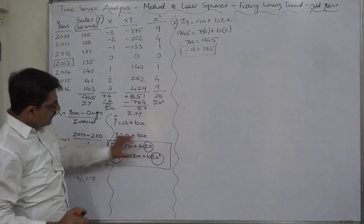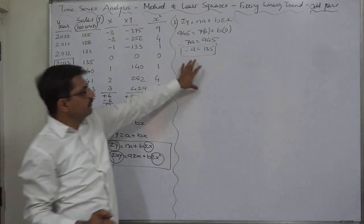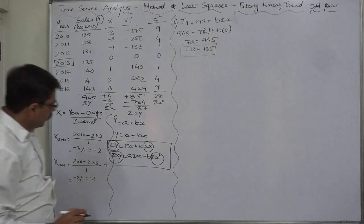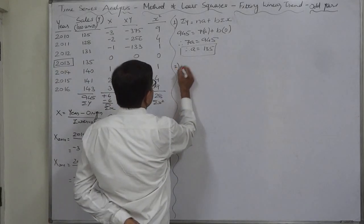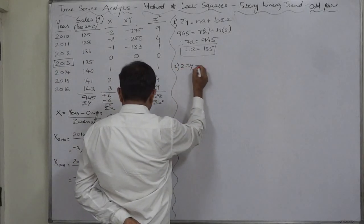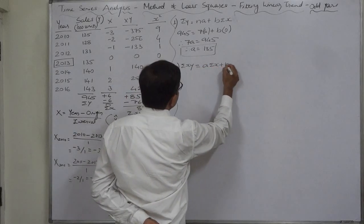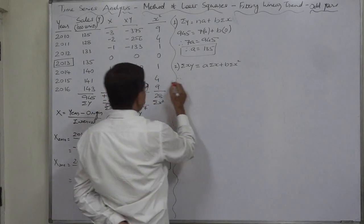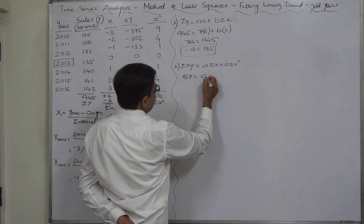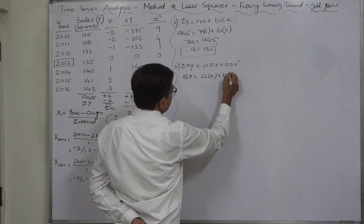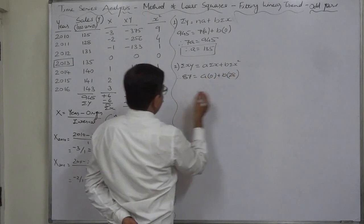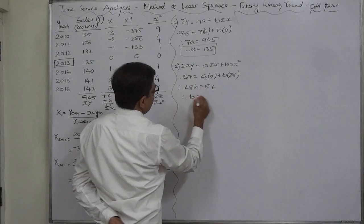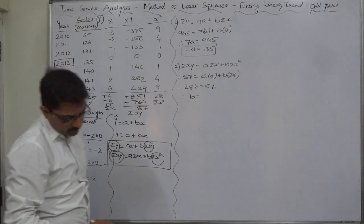From the first normal equation we can find out the value of a, and from the second we will be able to find out the value of b. That is sigma XY equals to a sigma X plus b sigma X square. Let us substitute the value. Sigma XY is 87, a into sigma X 0 plus b into sigma X square 28. Therefore 28b equals to 87, therefore b equals to 3.107.